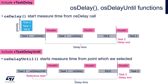Let's have a closer look at what is the difference between OSDelay and OSDelayUntil functions. OSDelay calls vTaskDelay and requires enabling include_vTaskDelay within the FreeRTOSConfig.h file. It sends the calling task from run to blocked state for a given number of milliseconds, counting from the function call.